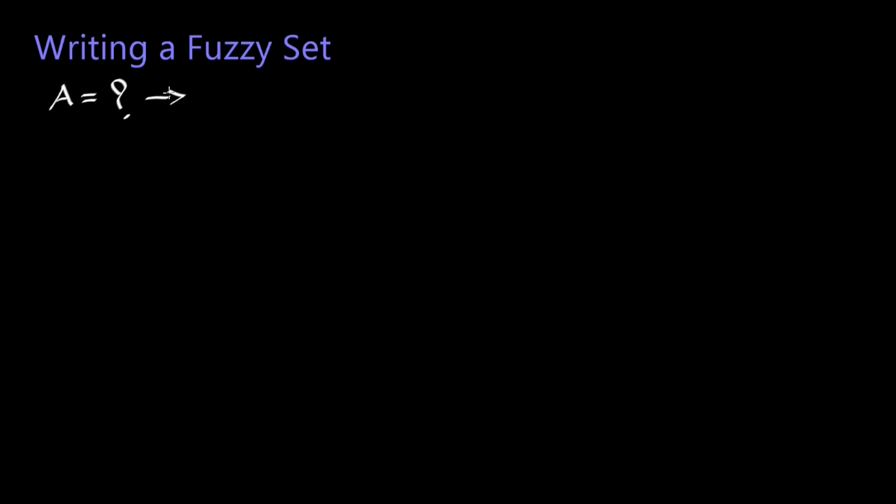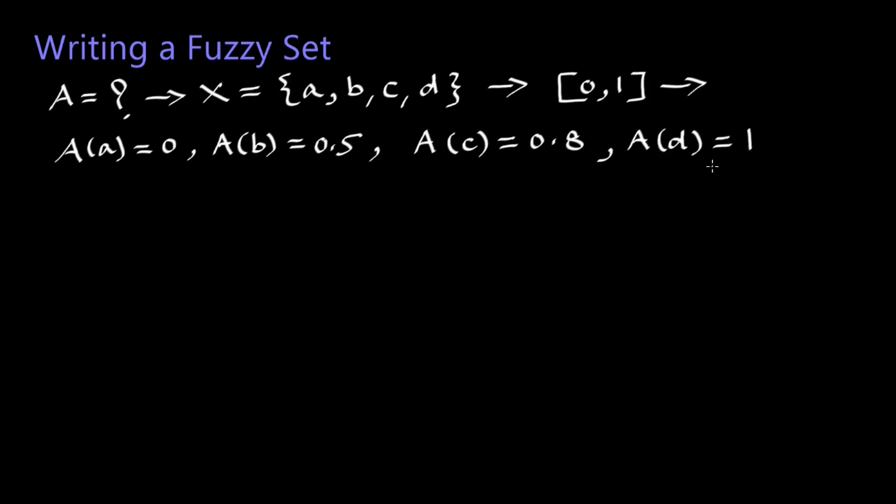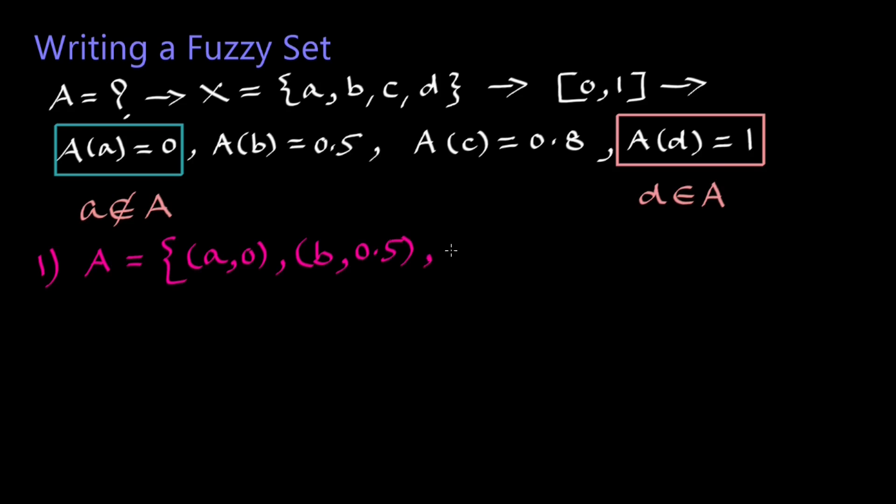Write a fuzzy set A if universal set X is A, B, C, D and membership grades in closed interval 0,1 are: of member A is 0, of member B is 0.5, of member C is 0.8, and that of member D is 1. Grade 0 means member A does not belong to fuzzy set A and grade 1 means member D is a full member of fuzzy set A. By first method we write fuzzy set A as a set of ordered pairs: (B, 0.5), (C, 0.8), and (D, 1).